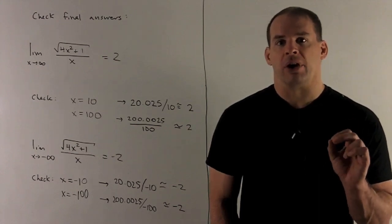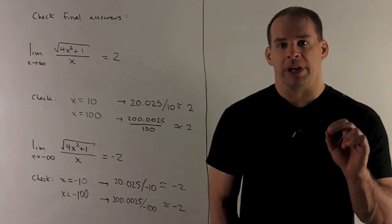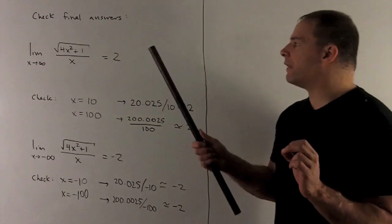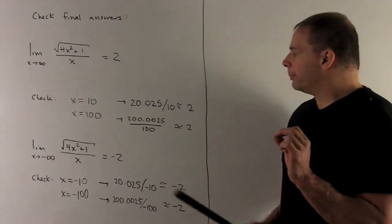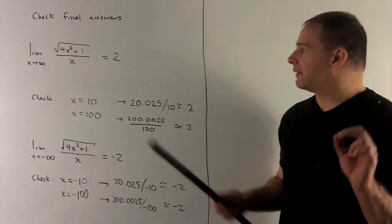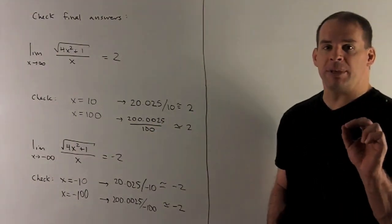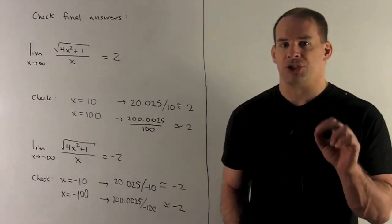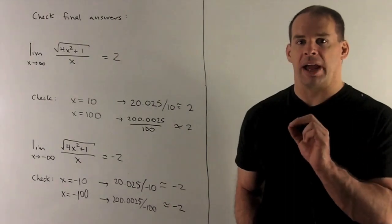If I put in x equal to 10 for our function, we'll note what comes out. We're going to get 20.025 divided by 10, and that's going to give me something that's pretty much 2. So, just checking at 10 is going to get me close to my answer here.